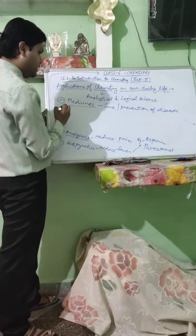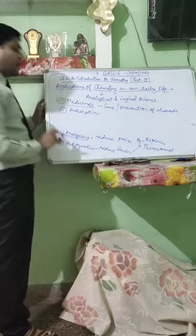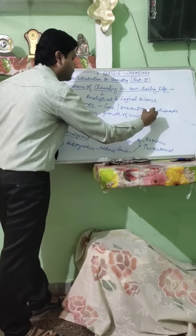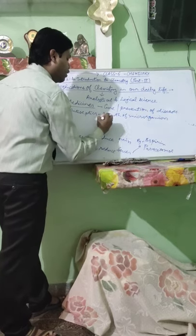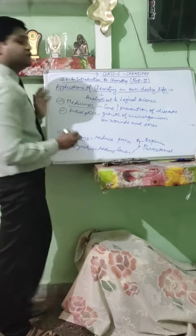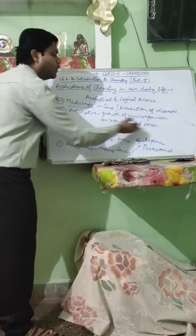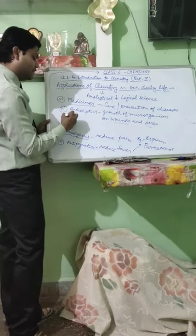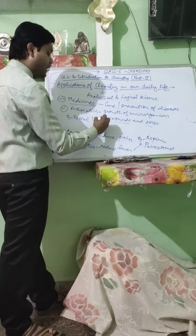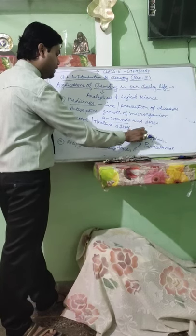The fourth category is antiseptics. Antiseptics are medicines which prevent the growth of microorganisms on wounds and sores. If we get hurt while playing or otherwise, we use antiseptics so that our wound or sores do not worsen. Dettol is one of the best known antiseptics, as well as tincture of iodine.